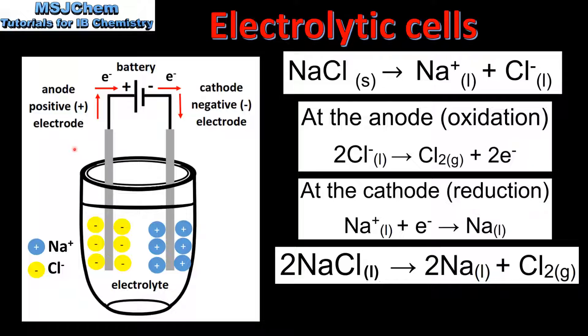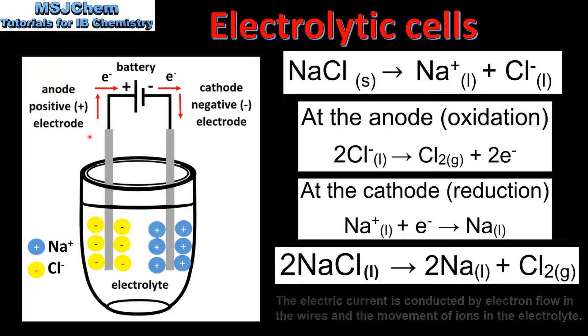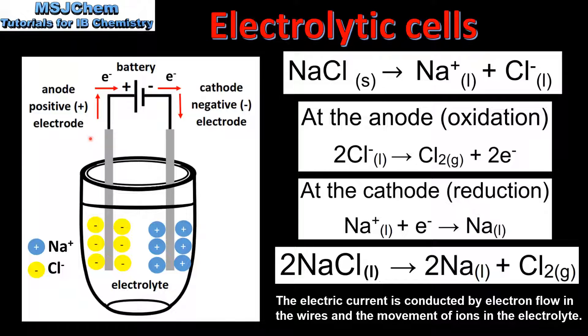And finally we look at how an electric current is conducted in an electrolytic cell. There are two ways in which the electric current is conducted. The first is the flow of electrons in the wires. As we can see on this diagram, the electrons flow from the positively charged anode to the negatively charged cathode.